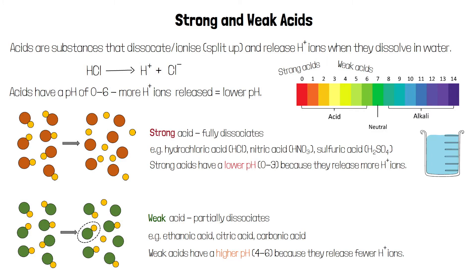It's possible for an acid to be strong, but also be dilute. This is because a strong acid can be dissolved in a large volume of water. There are few molecules of acid compared to water molecules, but all of the acid molecules still dissociate, so it's still known as a strong acid.